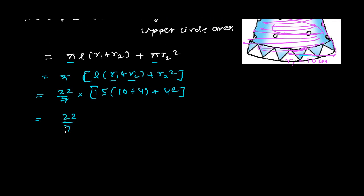15 × 14 = 210, and 4² = 16. So it's (22/7) × (210 + 16) = (22/7) × 226.